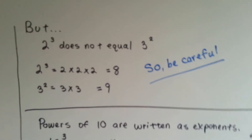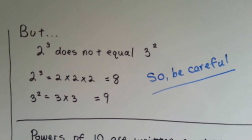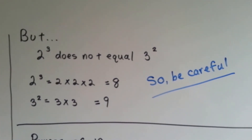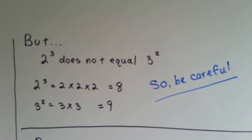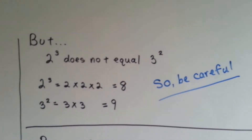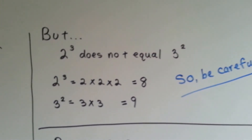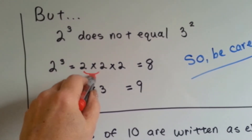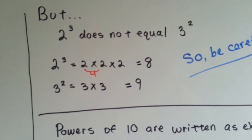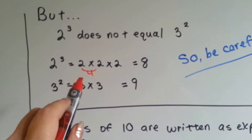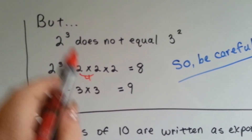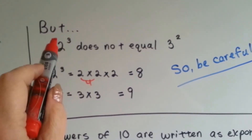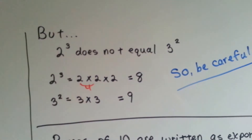Be very careful, because 2 to the 3rd power does not equal 3 to the 2nd power — they are not interchangeable. It's not like 2 times 3 or 3 times 2. 2 to the 3rd power means 2 times 2 times 2: 2 times 2 is 4, and 4 times 2 is 8. 3 to the 2nd power is 3 times 3, which is 9. The exponent tells you how many times to multiply the base to itself.